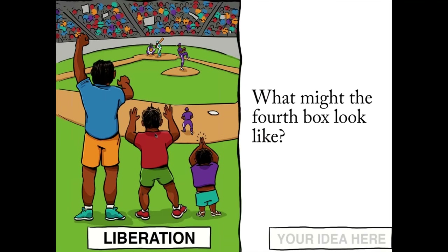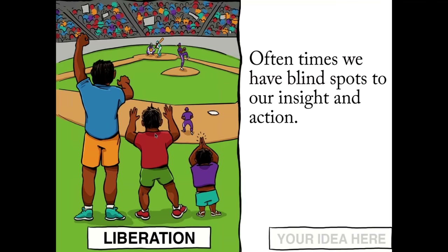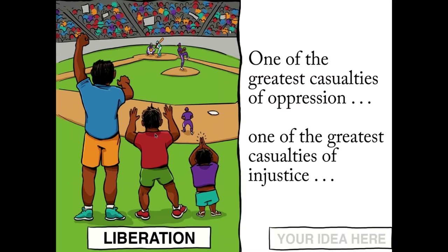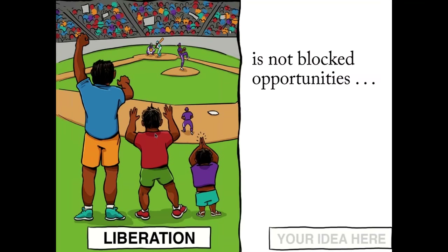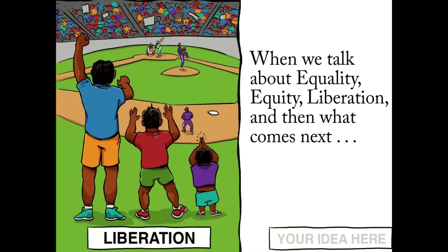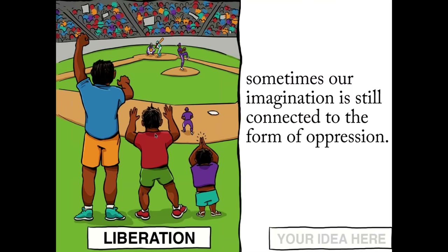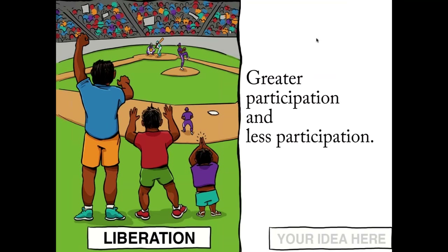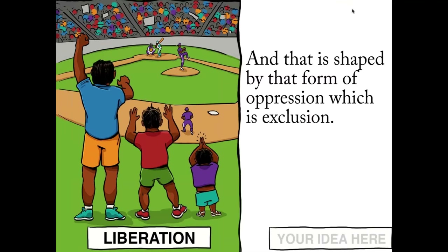The reason we do this — how do we begin to think about insight and action — is that oftentimes we have blind spots. One of the greatest casualties of oppression, one of the greatest casualties of injustice, is not blocked opportunities. The greatest casualty of injustice and oppression is a threat to our imagination. It's a threat to hope. When we talk about equality, equity, and liberation, and then what comes next, sometimes our imagination is still connected to the form of oppression. The through line becomes a form of participation — greater or lesser — and that is shaped by exclusion.